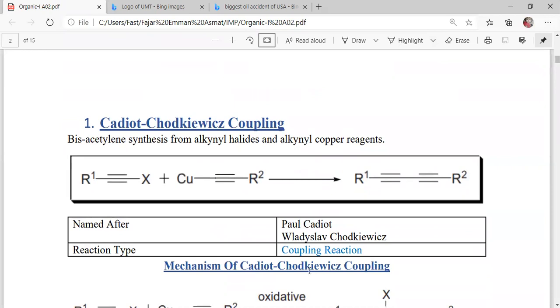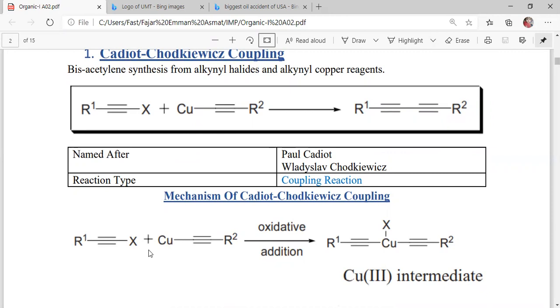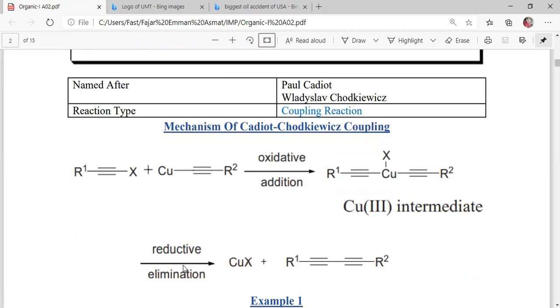Now we will discuss its mechanism. In this reaction, alkynyl halide will react with alkynyl copper reagent, which will undergo oxidative addition resulting in the formation of a copper(III) intermediate. This intermediate would undergo reductive elimination.